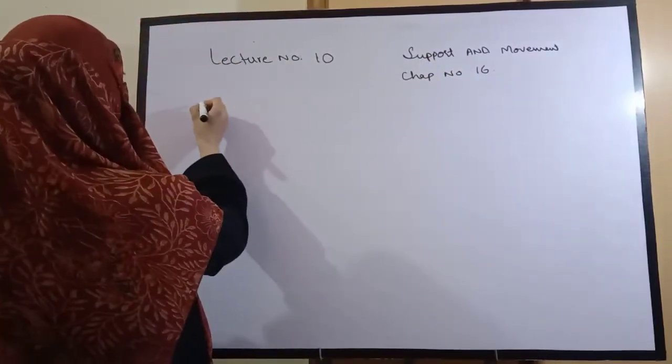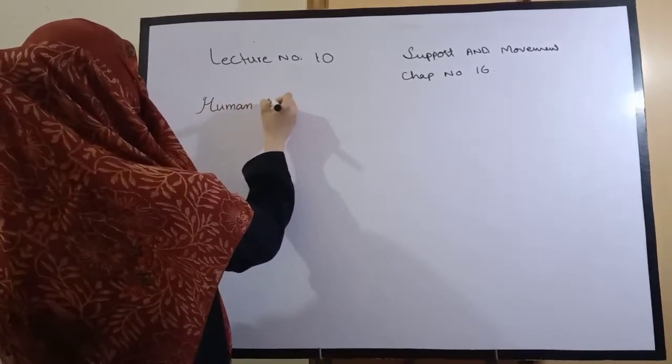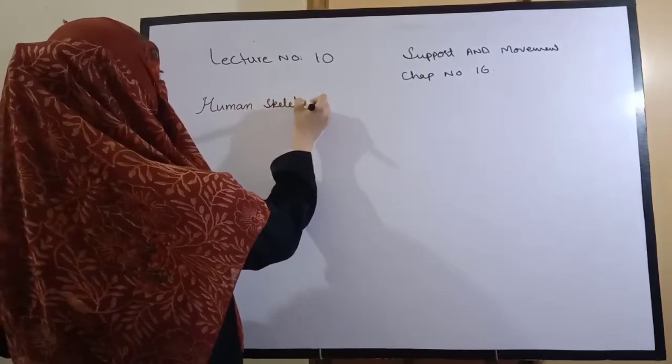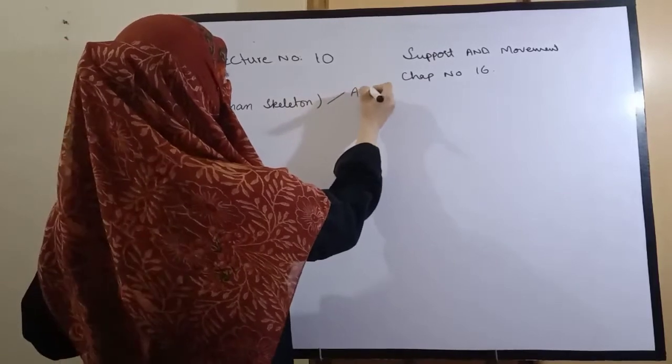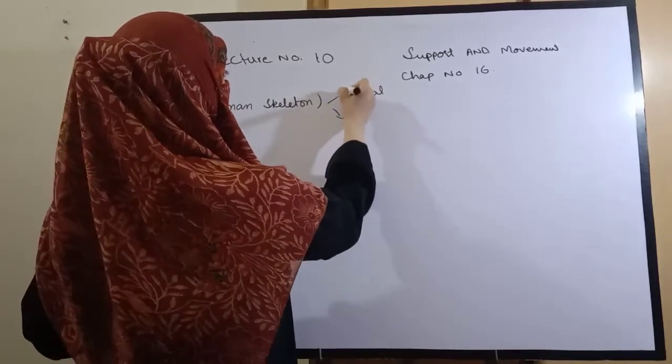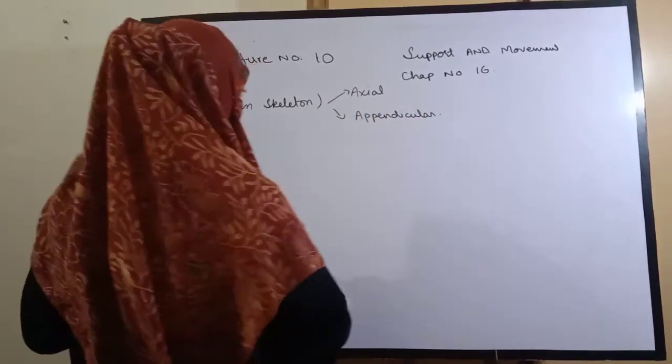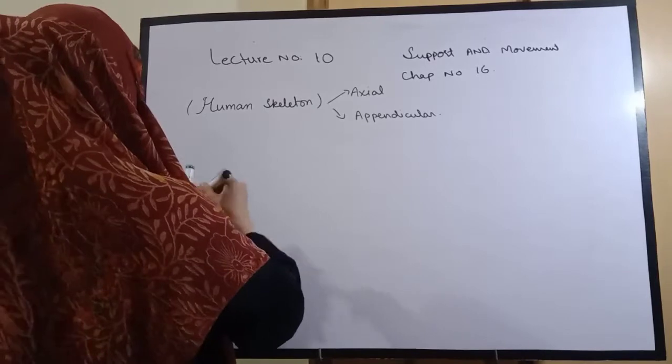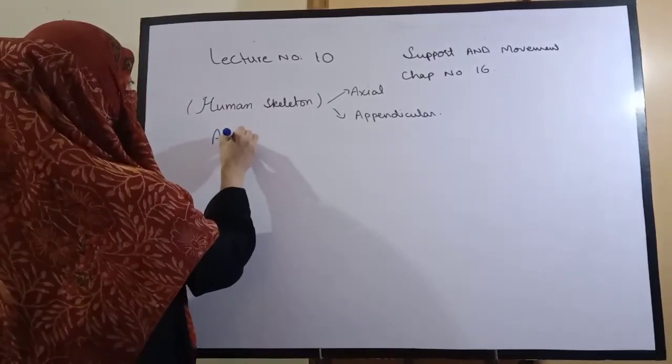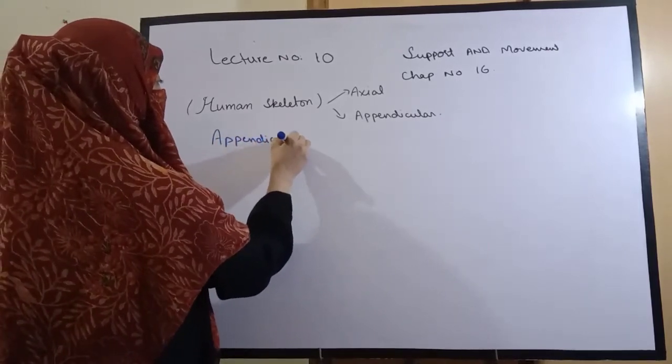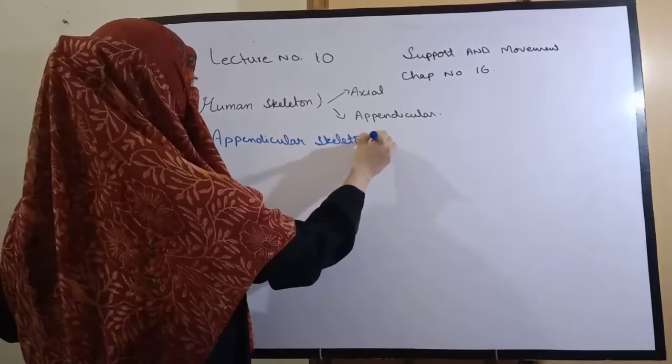In the last lecture, we discussed the axial part of the human skeleton. Today we will discuss the appendicular part. Our appendicular skeleton includes pectoral girdle, four limbs, pelvic girdle, and hind limbs.